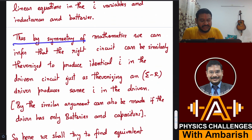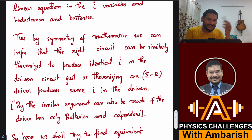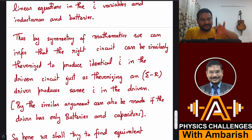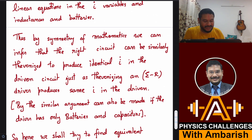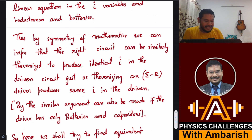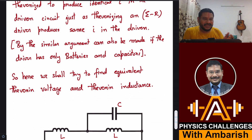Thus by symmetry of mathematics, we can infer that the inductor-battery circuit can be similarly Thevenized to produce identical İ in the driven circuit. If there is some İ, integrating it gives the current I in the driven circuit. This is analogous to Thevenin's in a battery-resistor circuit producing the same I in the driven circuit. So the Thevenin equivalent produces the same İ in the driven as the original circuit.